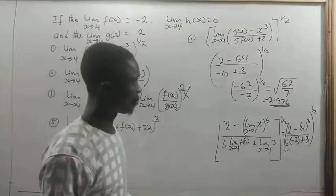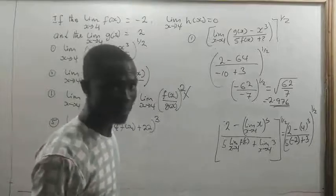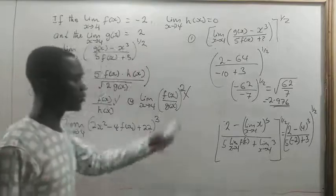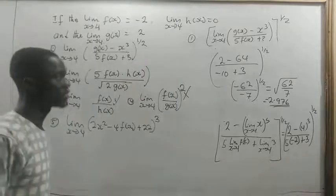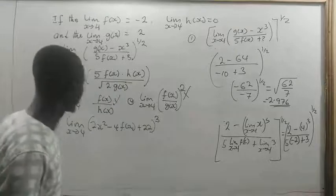That gives us 62 divided by 7. Taking the square root of 62/7 gives us approximately 2.976 to 4 significant figures. That is how we evaluate each step.